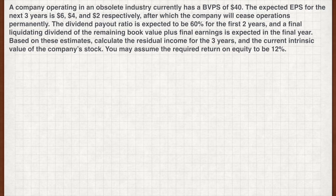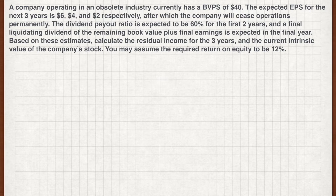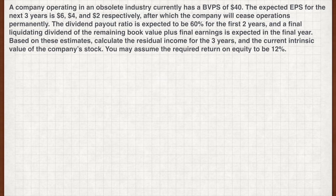The dividend payout ratio is expected to be 60% for the first two years, and a final liquidating dividend of the remaining book value plus final earnings is expected in the final year. Based on these estimates, calculate the residual income for the three years and the current intrinsic value of the company's stock. Assume the required return on equity to be 12%.